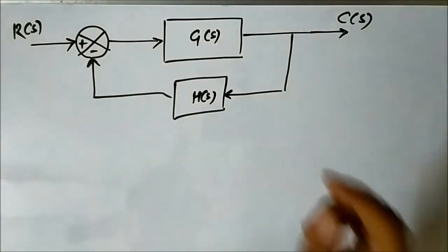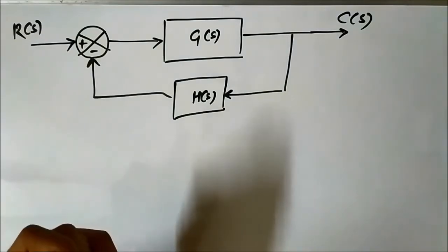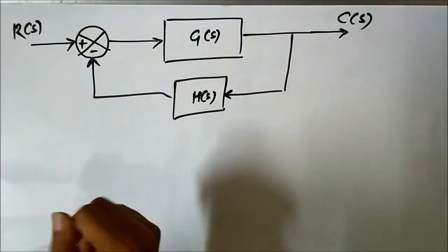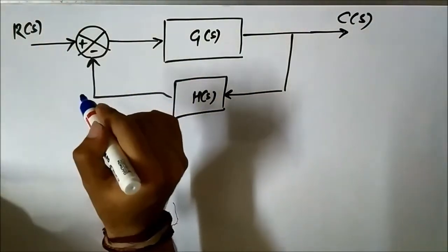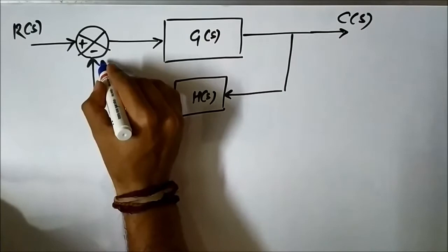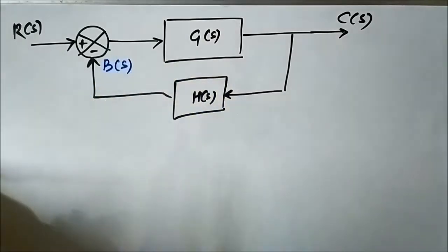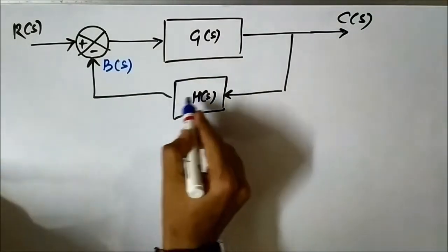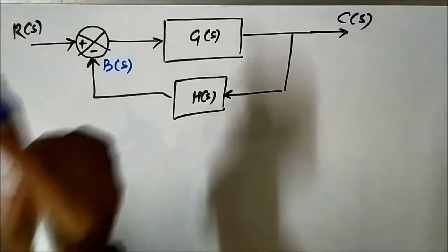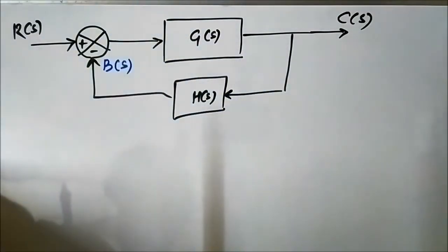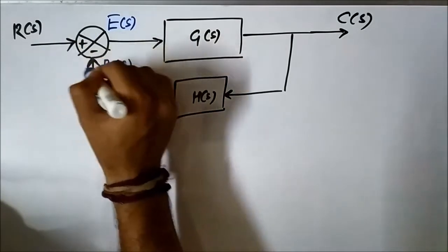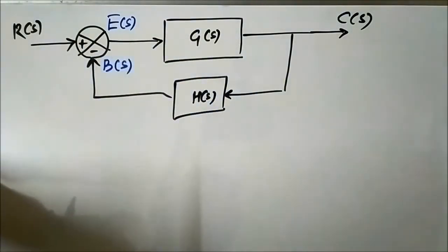We also have the feedback path transfer function H(s) and the output signal C(s). The output signal is passed through this feedback path transfer function. Let the signal at the output of this feedback path block be called the feedback signal, and let us represent it as B(s). The output of the summing block we call the error signal E(s).